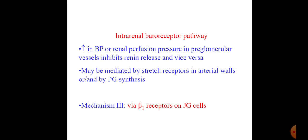The intrarenal baroreceptor pathway: if there is an increase in blood pressure or renal perfusion pressure in the pre-glomerular vessel, it inhibits renin release, and vice versa. This may be mediated by stretch receptors in the arterial walls or by prostaglandin synthesis. Similarly to the macula densa pathway, increased perfusion pressure in the glomerular vessel tends to inhibit renin release, and decreased renal perfusion pressure causes increased renin release. Prostaglandin also plays a role, tending to increase renin release as sensed by stress receptors.